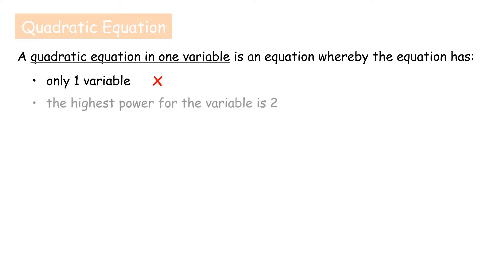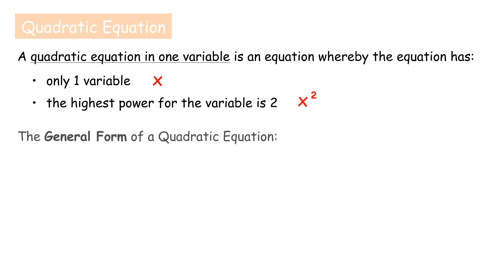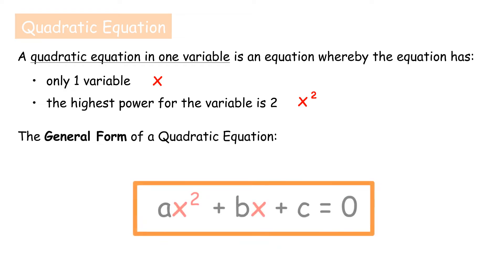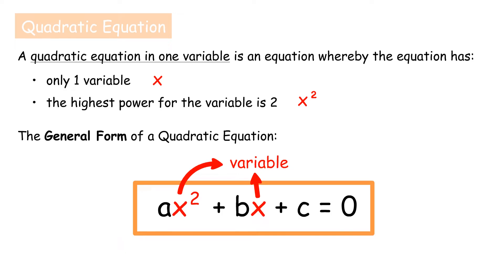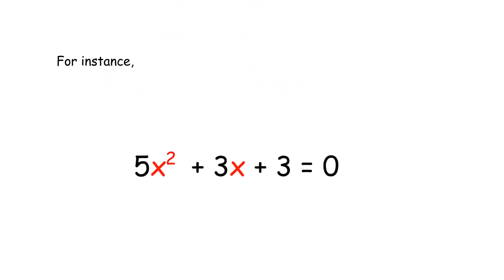And the highest power for the variable is 2, for example, x². The general form of a quadratic equation is ax² plus bx plus c equals 0, where a, b and c are constants, and a cannot be 0, while x is the variable or unknown. For instance, in 5x² plus 3x plus 3 equals 0, the power of 2 in x² makes it quadratic.